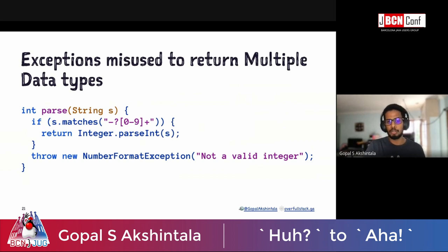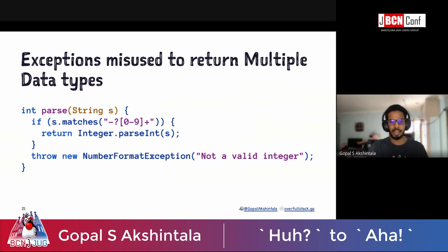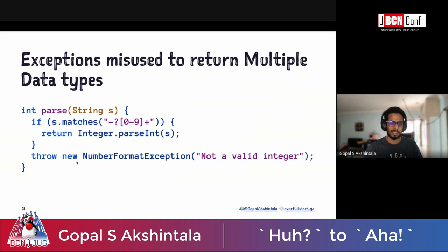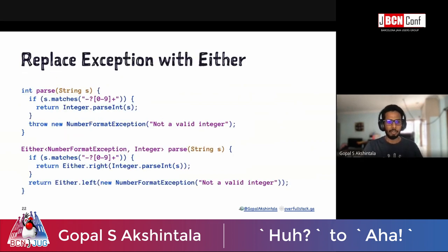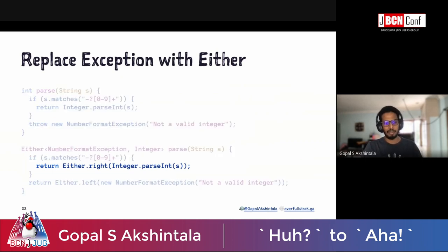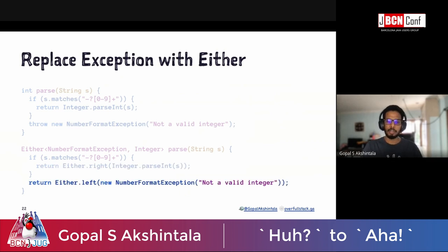Exceptions are also misused to return multiple data types. When a function normally returns an integer but something goes wrong, it throws an exception because it doesn't know how to return that error type. But if you use Either, you can return two different data types — if everything is wrong, it goes on the right; if something is wrong, it's on the left. We'll see how to extensively use this going forward, but for now just throw away exceptions from your code base.